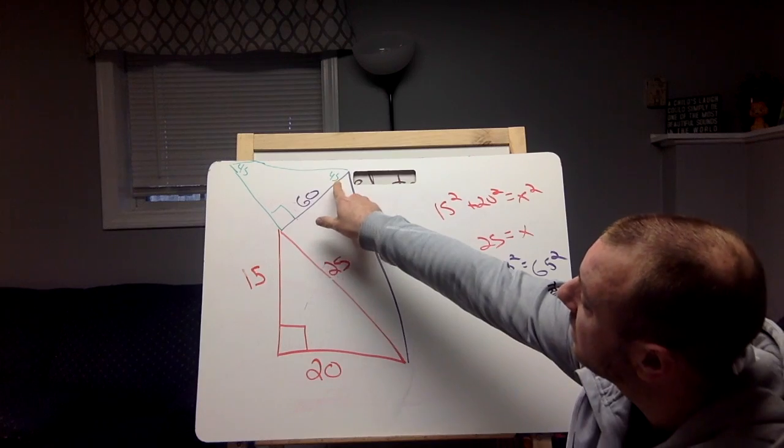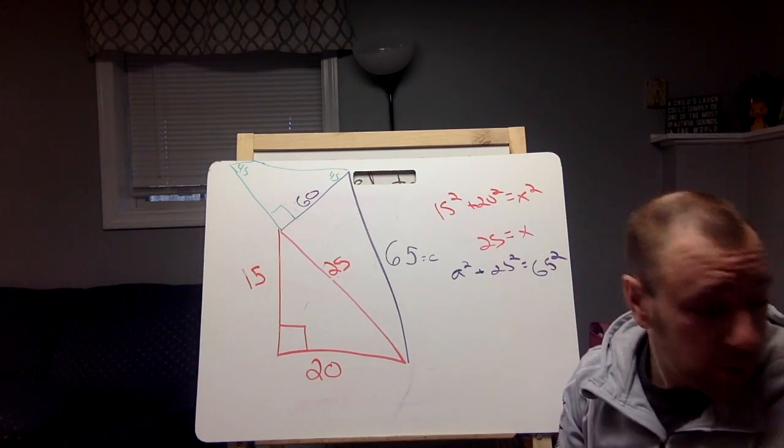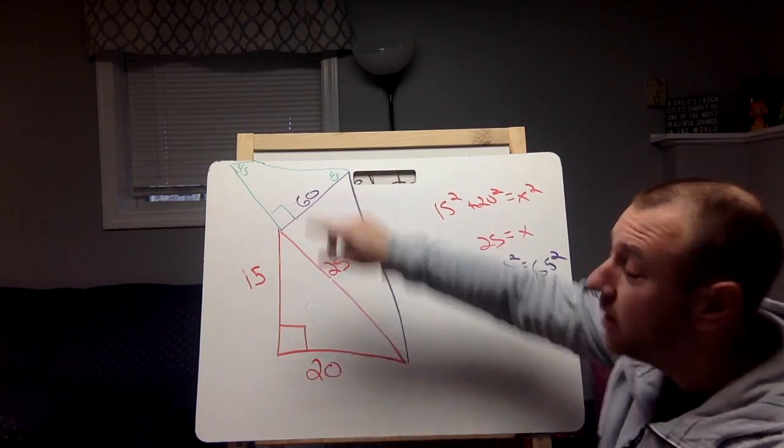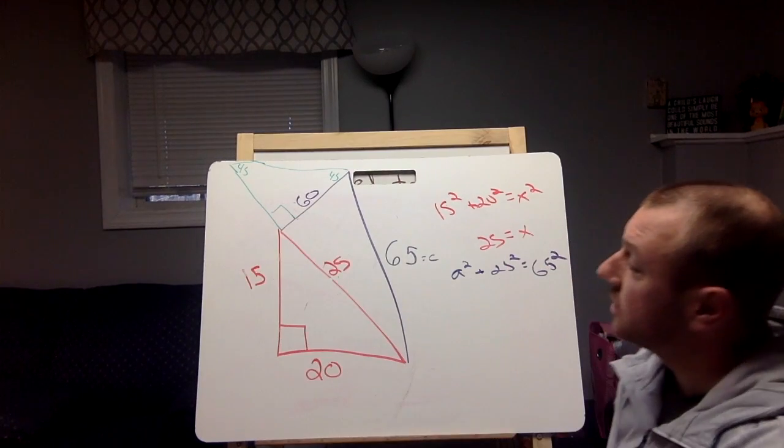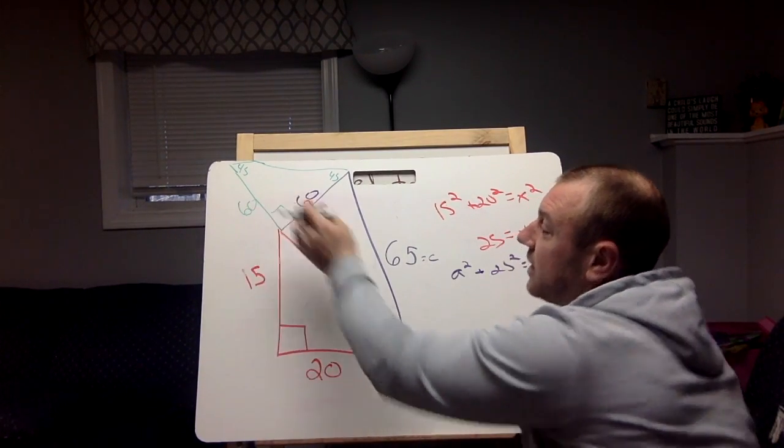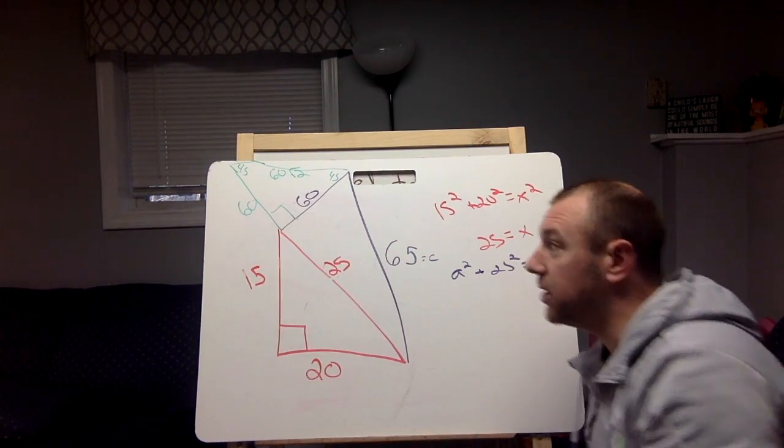But if you notice, I wrote that this is a 45-45-90 triangle. So on the top, if you remember these rules, these two sides of the triangle are going to be the same. So 60 and 60. And then the hypotenuse is 60 times the square root of 2.